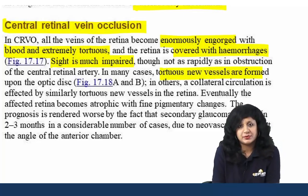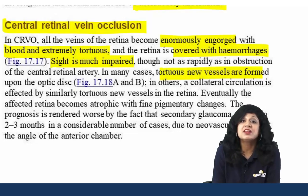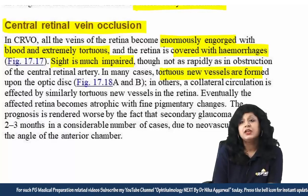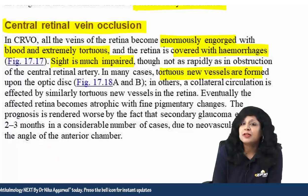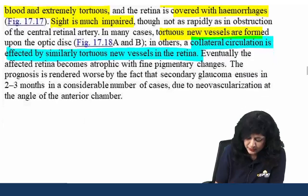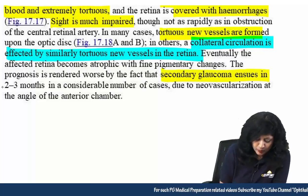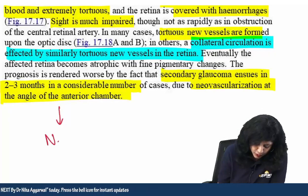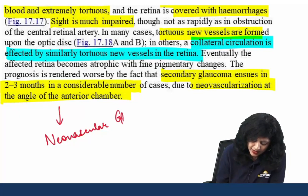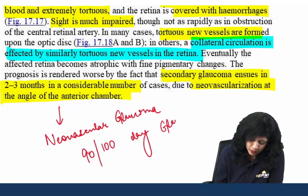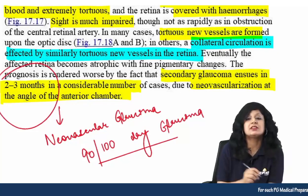CRVO is of two types: 75% of cases are the non-ischemic variety, while 25% are ischemic. Ischemic cases may develop neovascularization with lot of hemorrhages, while non-ischemic cases are spared due to collateral circulation. Eventually the retina becomes atrophic with fine pigmentary changes. Prognosis is worsened by secondary neovascular glaucoma, which develops at two to three months due to neovascularization at the angle of the anterior chamber — called the 90-day or 100-day glaucoma.